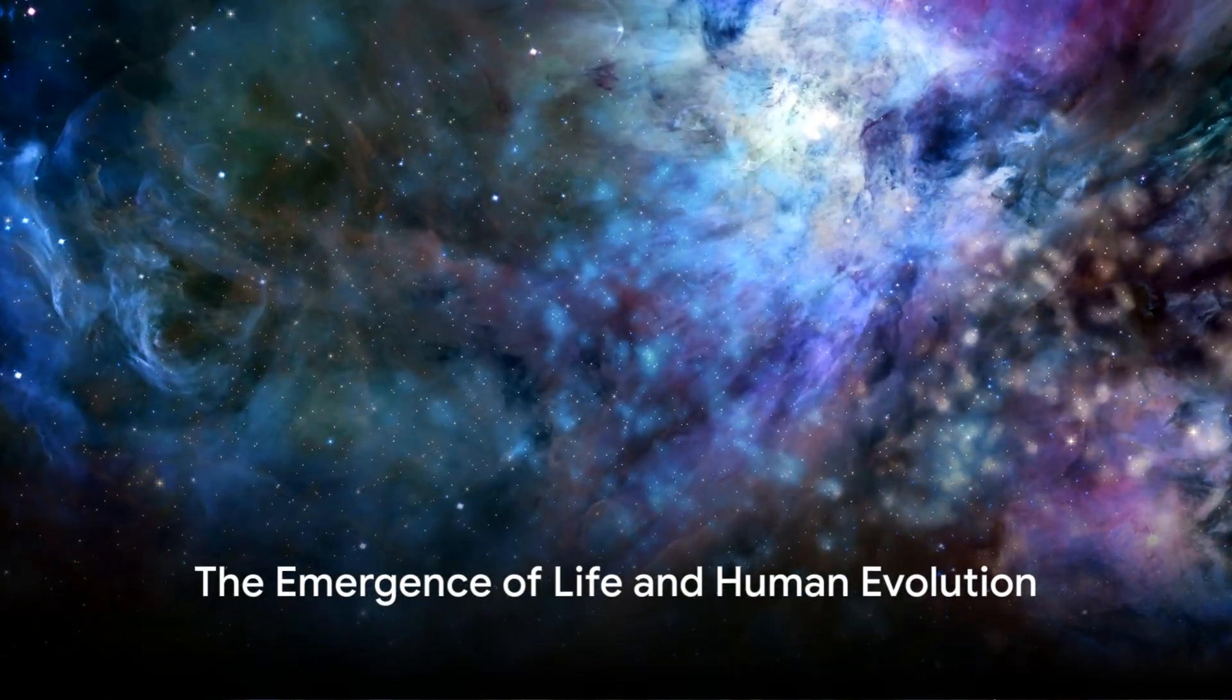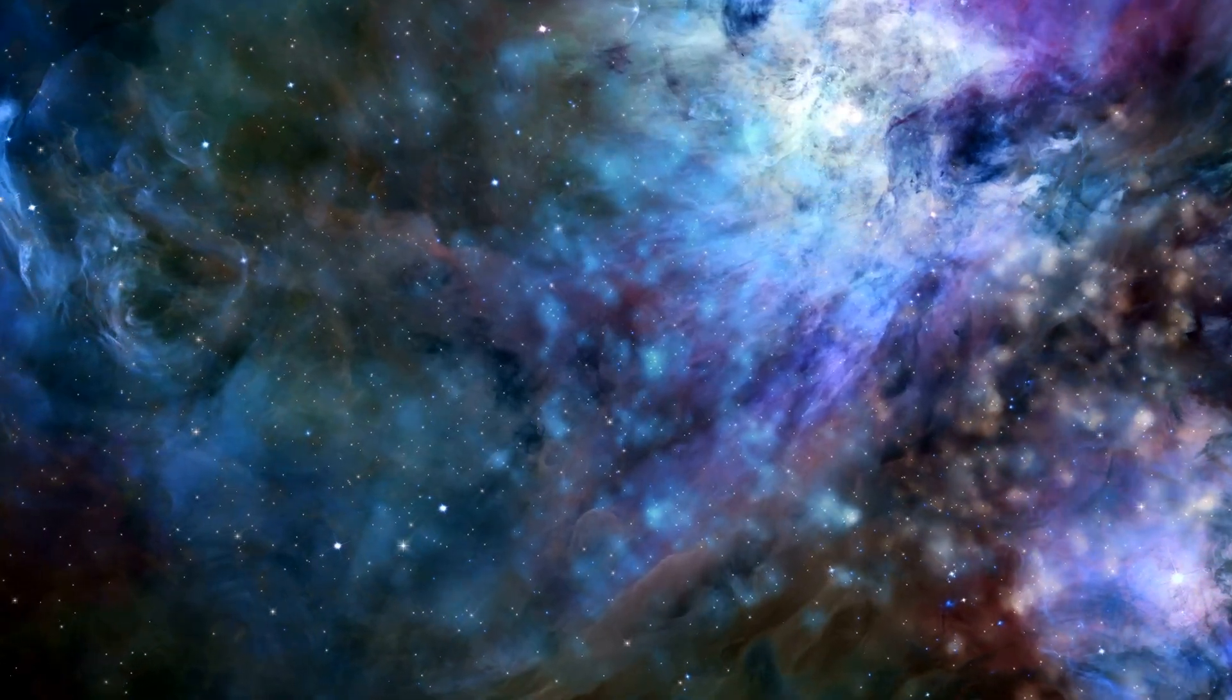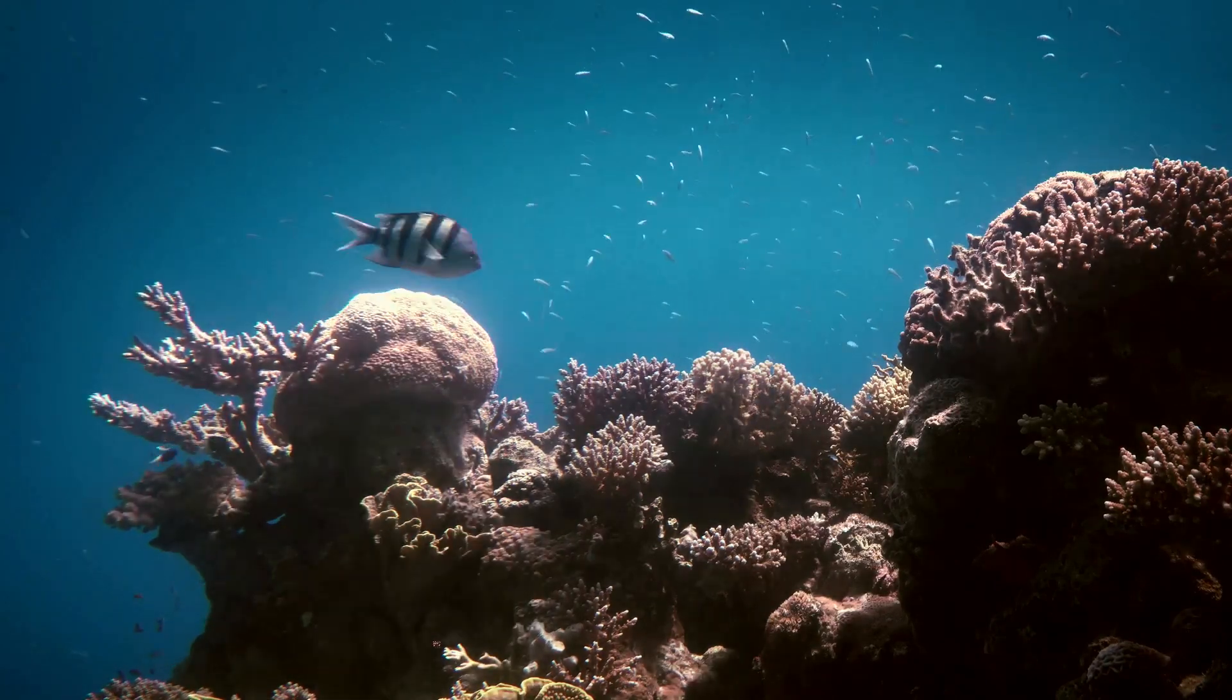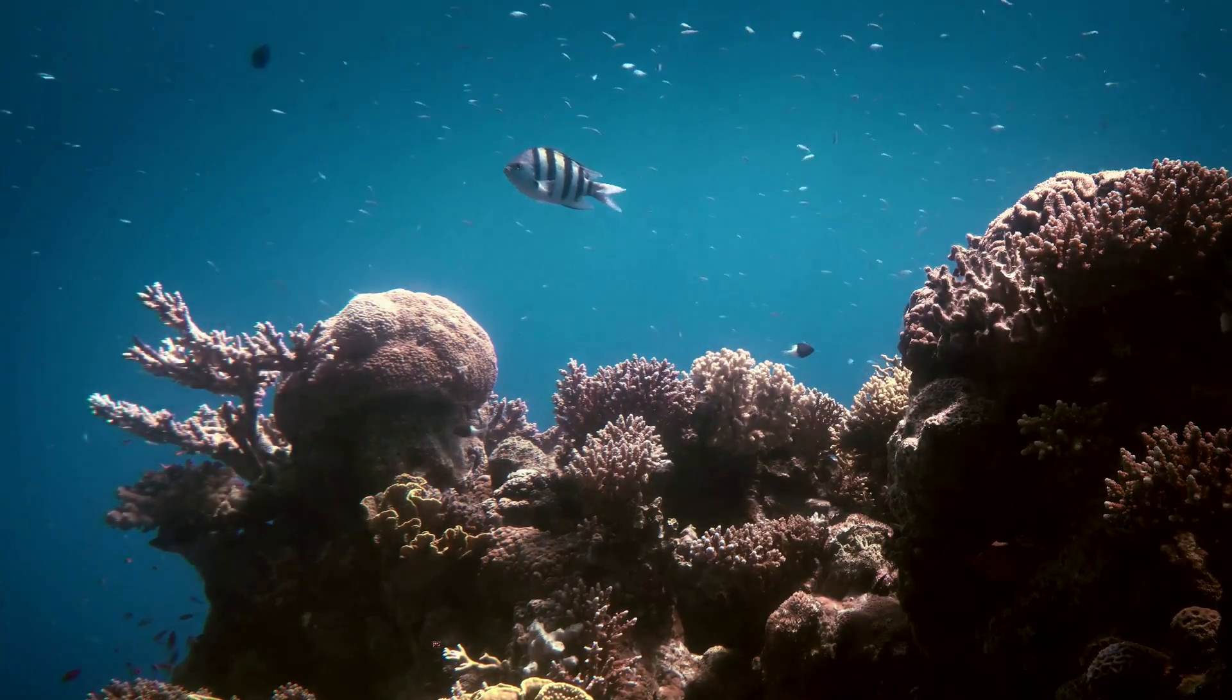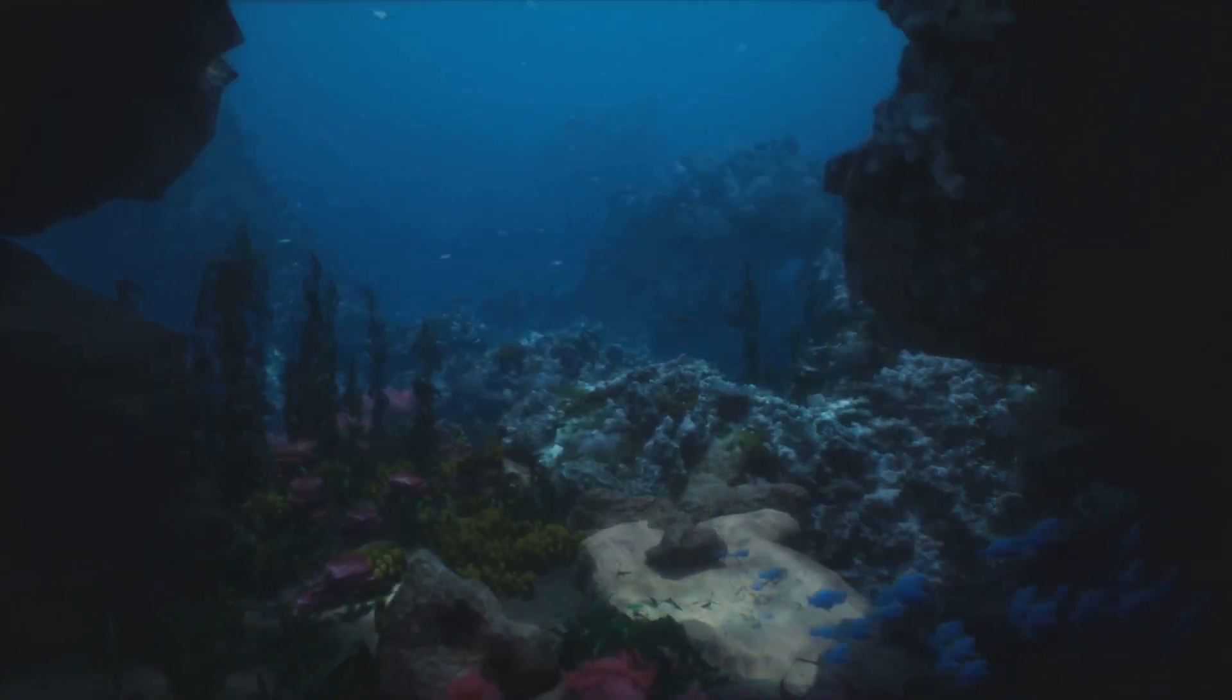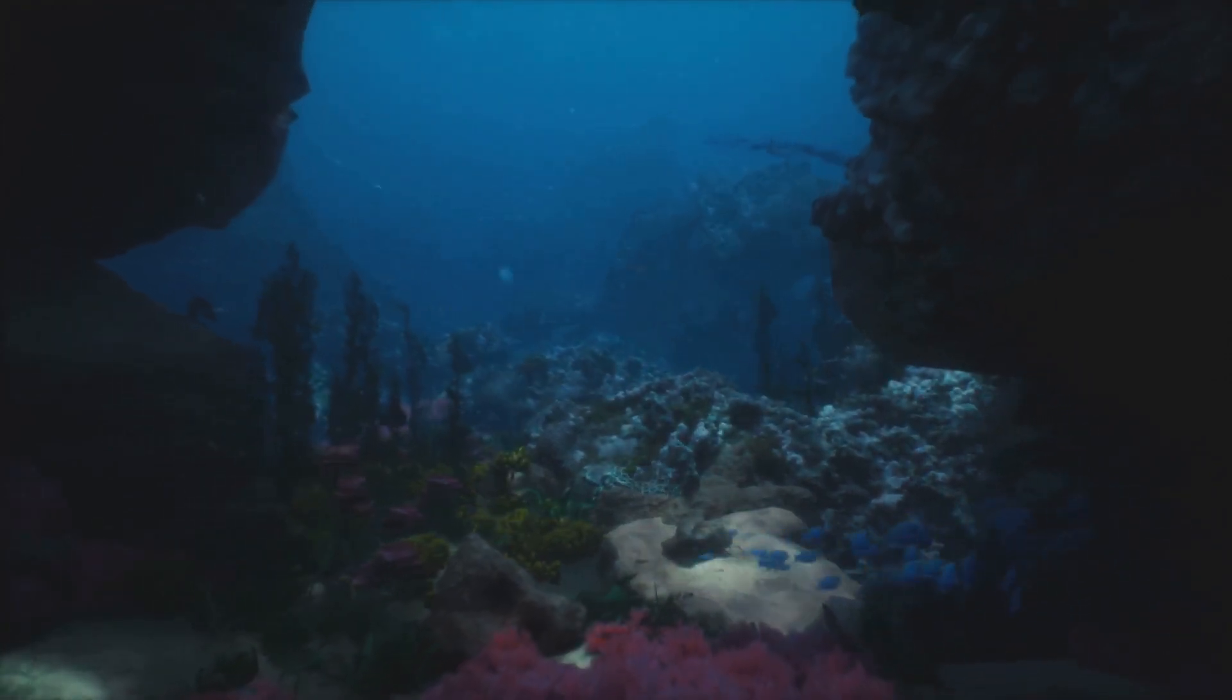On one small planet, in a galaxy among billions, life emerged and eventually evolved into a species capable of contemplating its own existence. This small planet, our Earth, is a unique and remarkable place. It's here that life as we know it took root in the primordial oceans billions of years ago. The first life forms were simple, single-celled organisms but over time, through the process of evolution, these organisms diversified and became more complex.